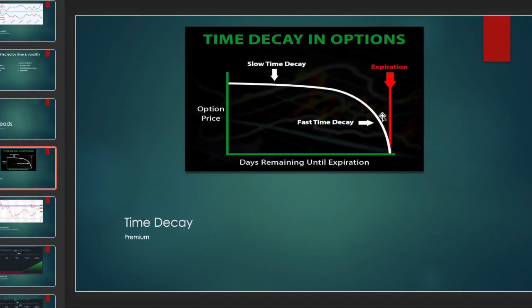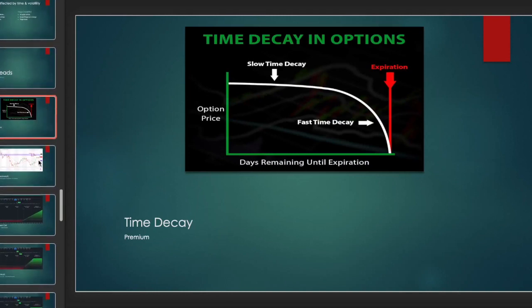The slowest time decay happens at the beginning and the fastest time decay happens towards the end. So when you buy an option near expiration date it can rocket more, making it more exciting to trade — you can make a lot more money, but it also makes it more dangerous because you can lose everything in a day. If you are a more conservative trader you end up buying options with 30 or more days to expiration, which is when time decay is the slowest. This is probably more suited for those of us who are not so risky with our money or with our trades.